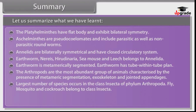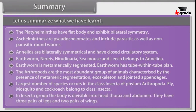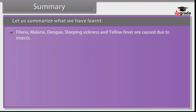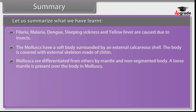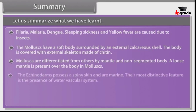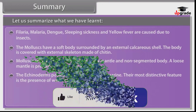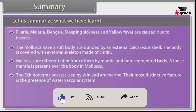Fly, mosquito and cockroach belong to class Insecta. In the Insecta group, the body is divisible into head, thorax and abdomen. They have three pairs of legs and two pairs of wings. Filariasis, malaria, dengue, sleeping sickness and yellow fever are caused by insects. Mollusks have a soft body surrounded by an external calcareous shell. The body is covered with an external skeleton made of chitin. Mollusks are differentiated from others by their mantle and non-segmented body, with a loose mantle present over the body.